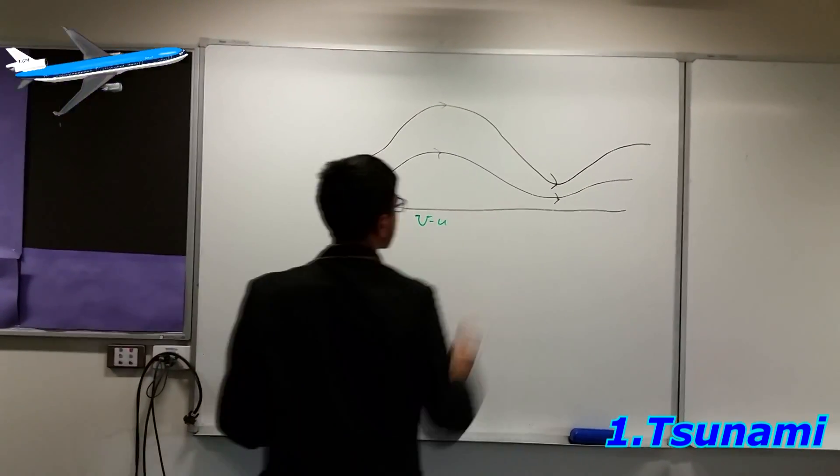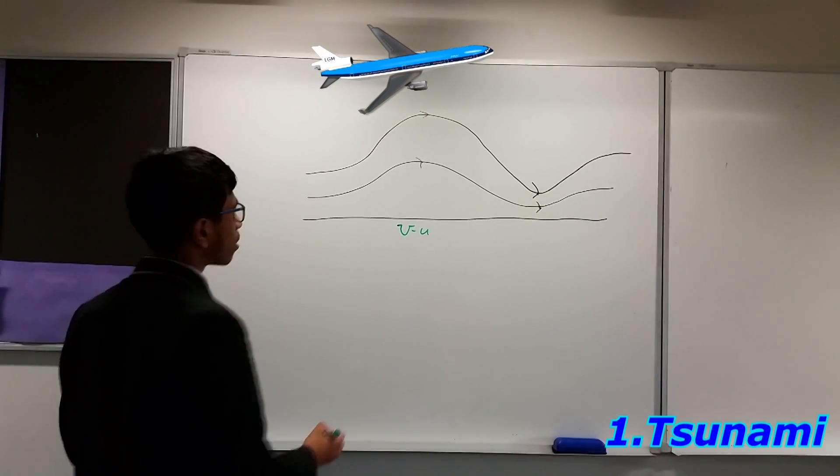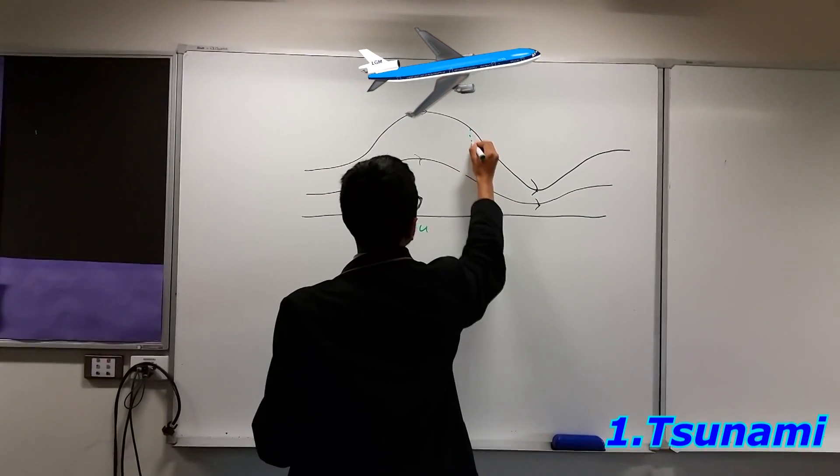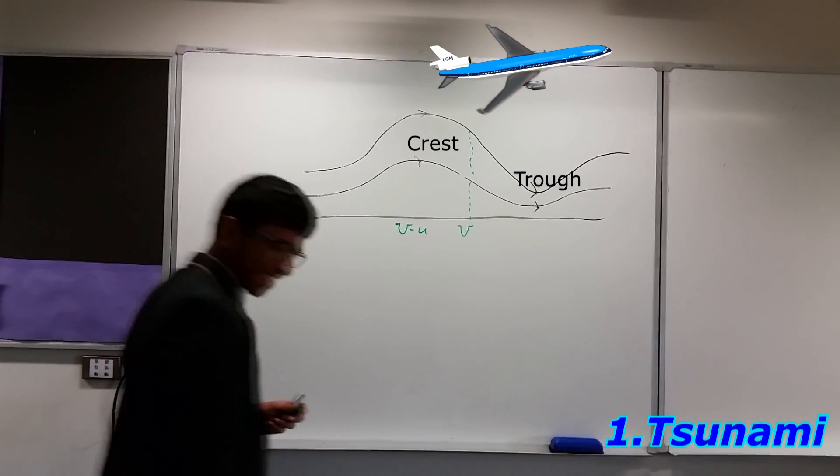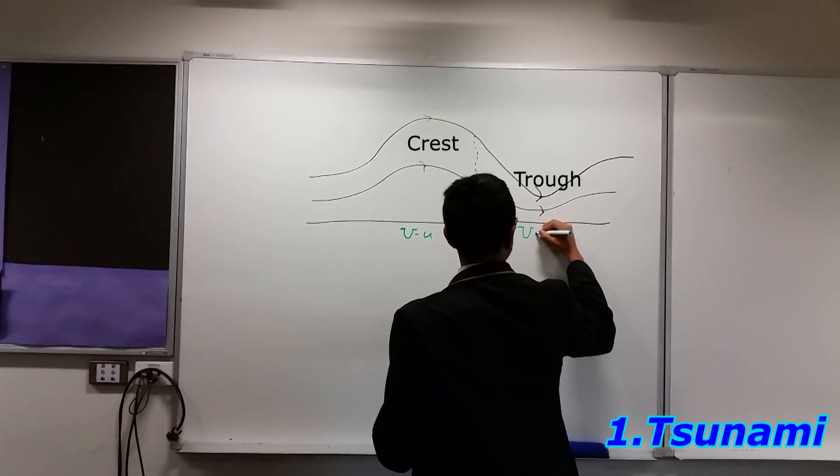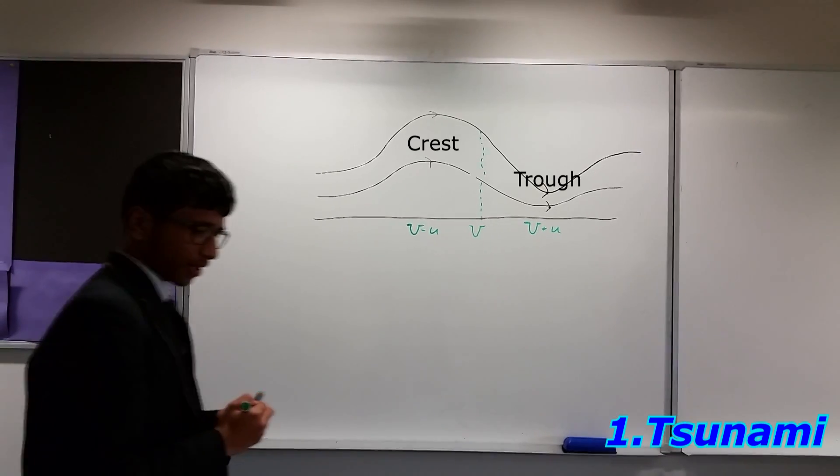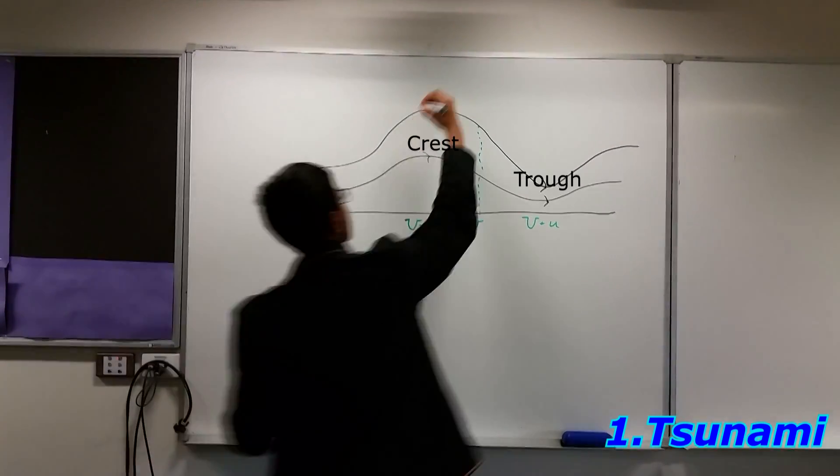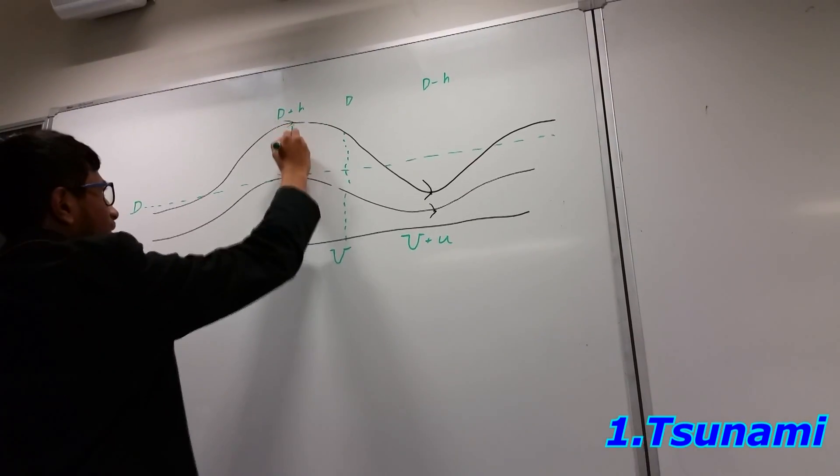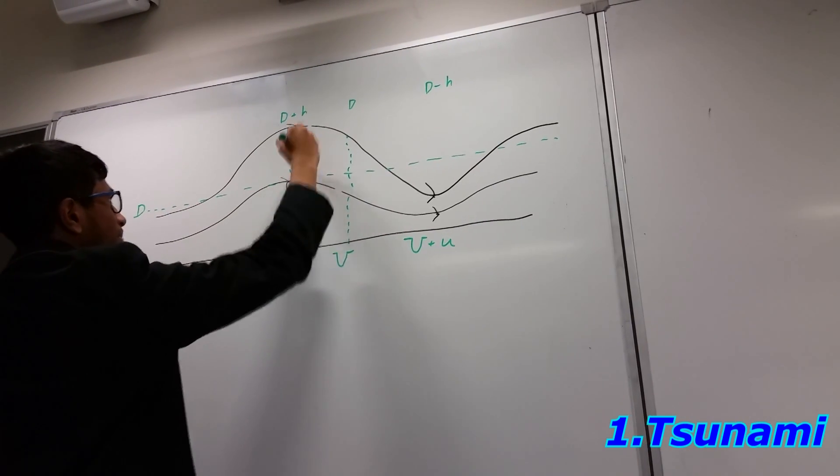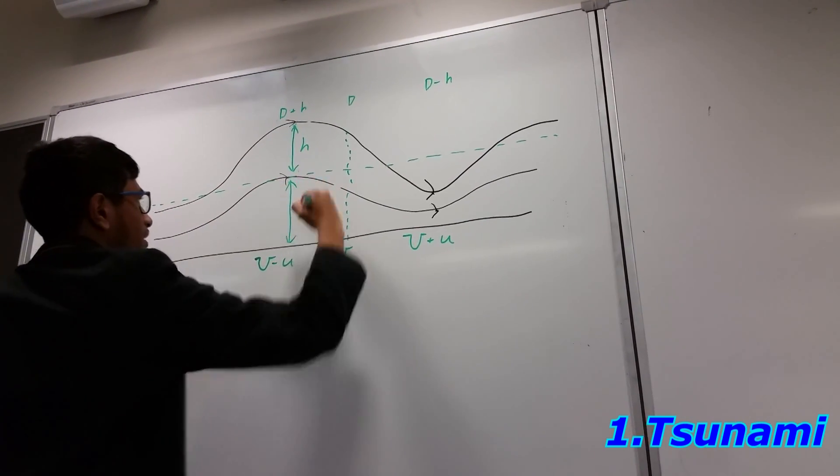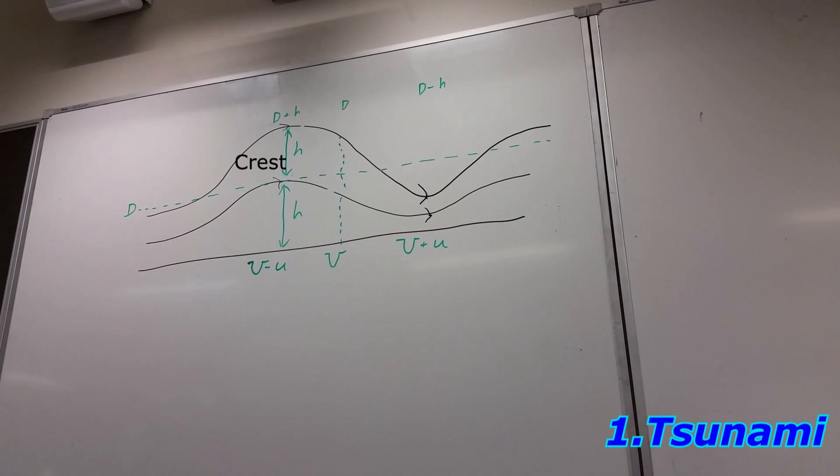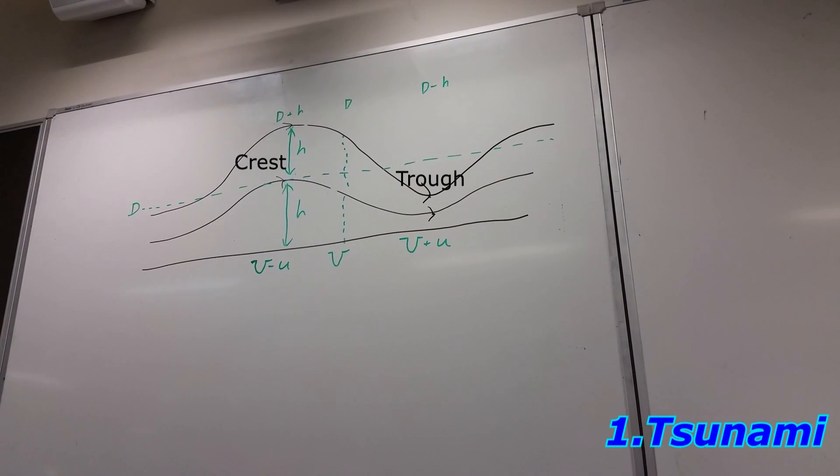Suppose we're on a low flying jet and just keeping pace with the tsunami. From our vantage point, we can call the average speed of the wave capital U. The wave would also appear slightly slower at the crest and slightly faster at the trough. We can call this difference little u and so the speeds are capital U minus u and capital U plus u at the crest and trough respectively. Also, let the average depth of the tsunami from the ocean floor be d. Let's assume the distance between the crest and the trough is 2h. So the crest is at a height of d plus h and the trough is at d minus h.